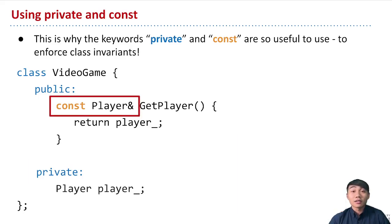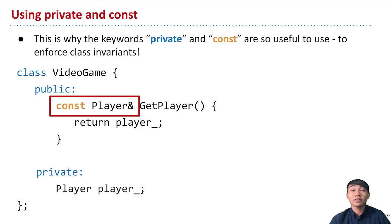Another helpful keyword is the const keyword. If we specify const in the return type of our functions, it ensures that the value our function returns is constant, meaning it can't be changed or modified. So we're providing an accessor function to let other people outside of the video game class access the player — we want to let them read into the player's stats, but we don't want them to be able to mutate it. The const effectively makes the player object returned in the getPlayer accessor function view-only, so we can rest assured that no one will make unwanted changes to the player in our video game.